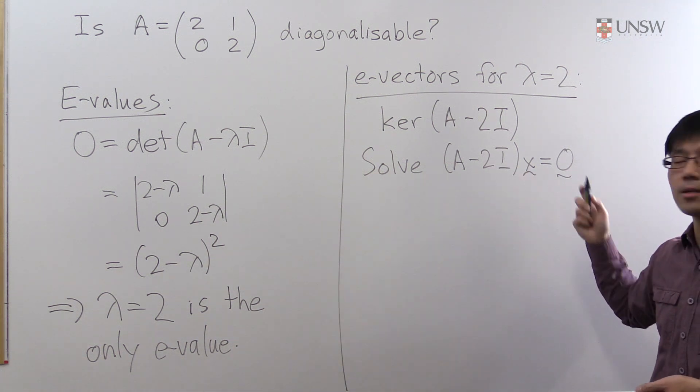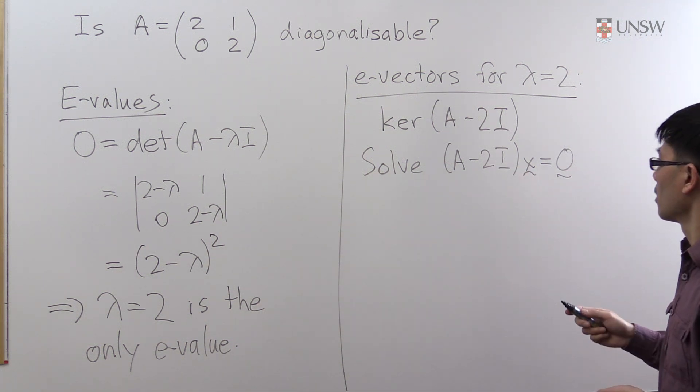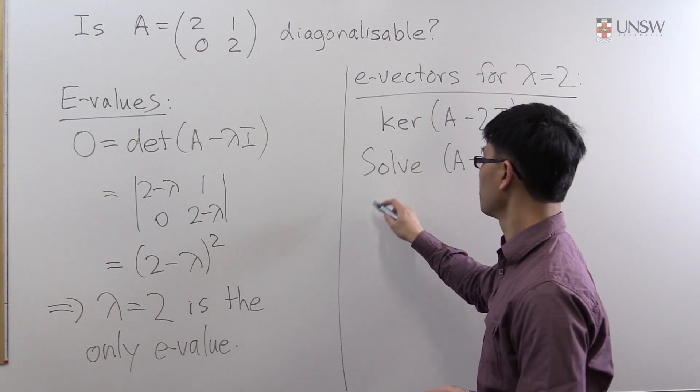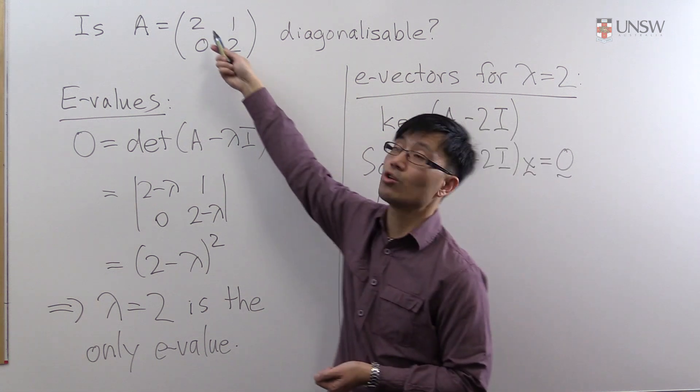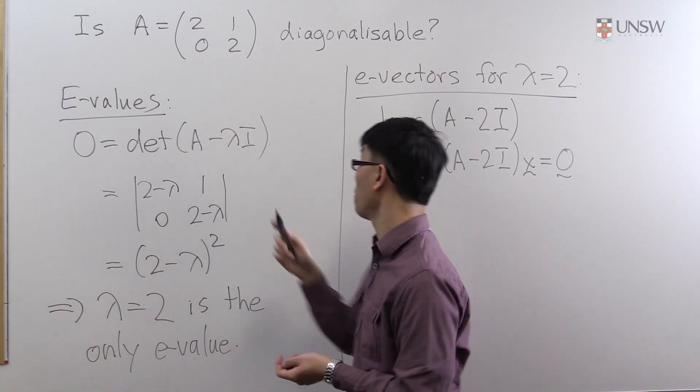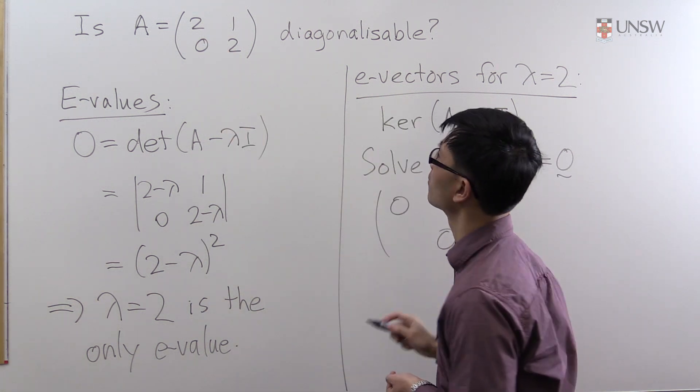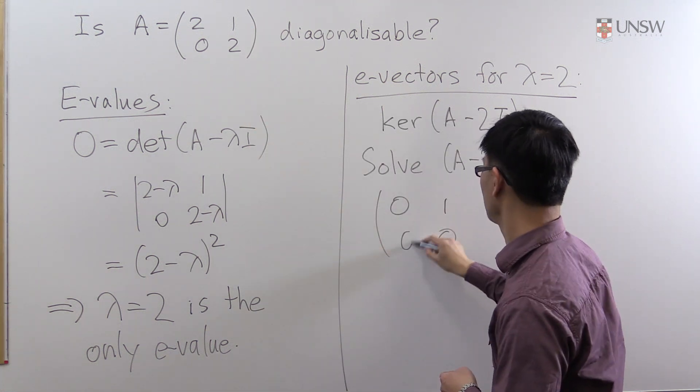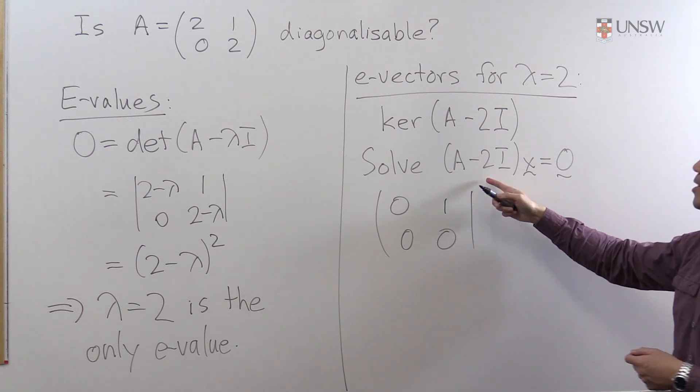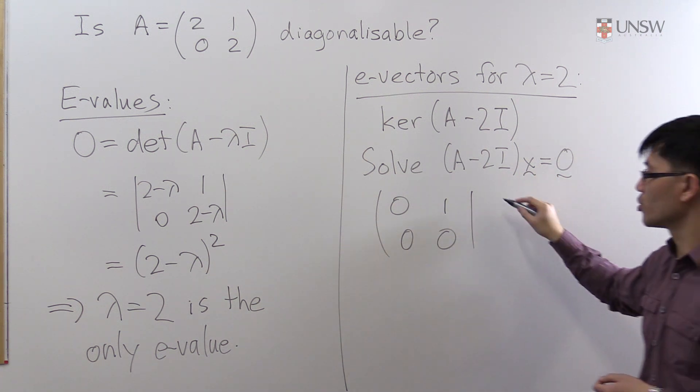And let's write this out as an augmented matrix. So for the A - 2I in the coefficient matrix we subtract 2 from the diagonals so we get 0. And the off-diagonal entries remain the same. And this we want equal to 0, it's a homogeneous equation.